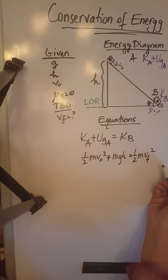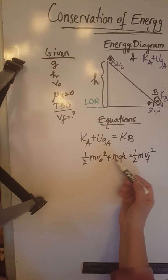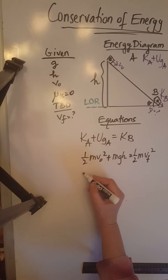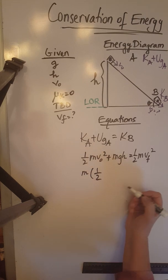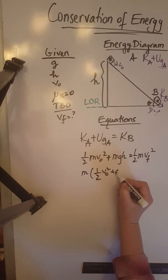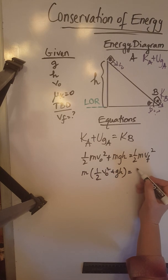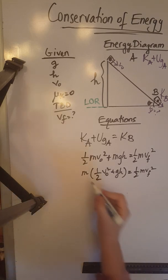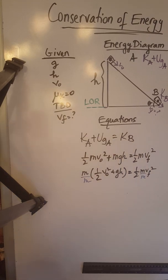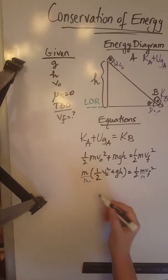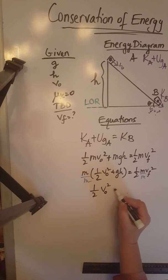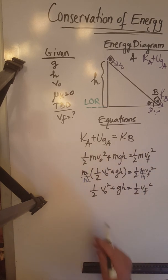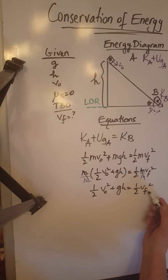In this equation we know everything except mass and final speed. To get rid of the mass, we factor it out from the left-hand side, giving us m times (one-half V₀² + gh) equals one-half m Vf². Now we divide both sides by mass, which cancels out, leaving us with the equation one-half V₀² plus gh equals one-half Vf².